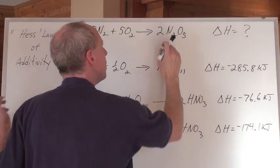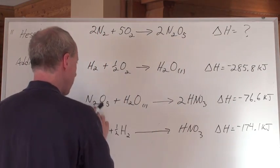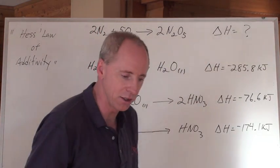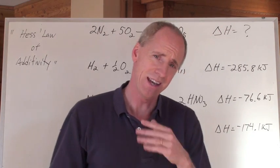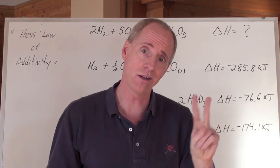So I go down here and I look for N2O5 and I find it. The N2O5 is a reactant here in the quantity of one. And I don't want it as a reactant. I want it as a product. And I want it in a quantity of two.